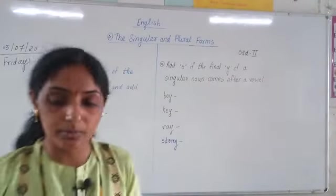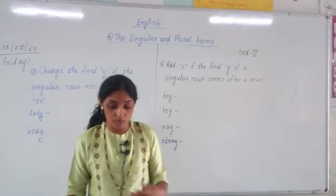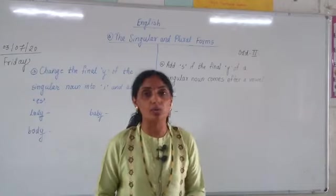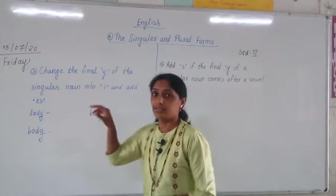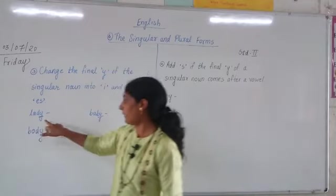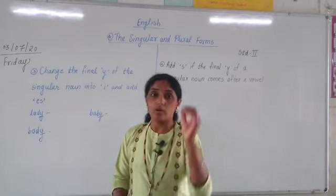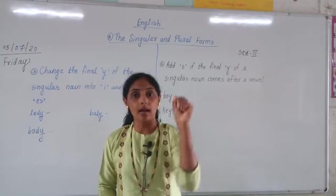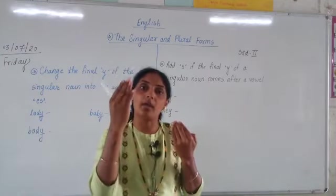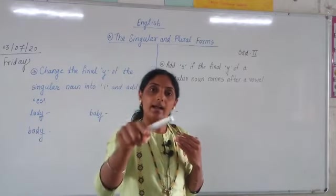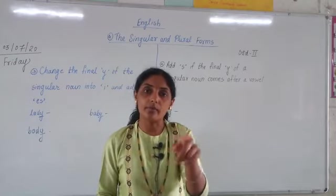Before we look at examples, let me tell you some more rules on how to form plurals. If the word is ending with the letter 'Y', what we have to do is remove that 'Y' and add 'I' in its place, and then add 'ES'.